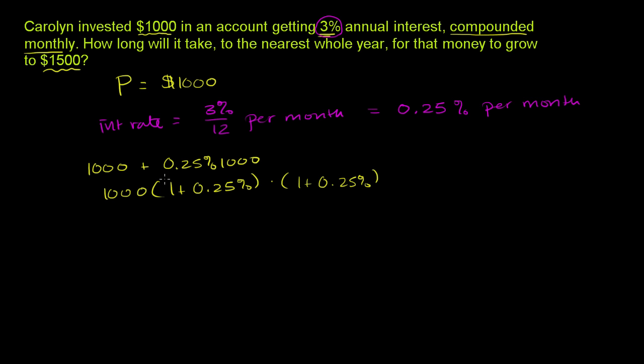After three months, you would have to multiply this whole thing again by this amount, times 1 plus 0.25%. So this is after three months.